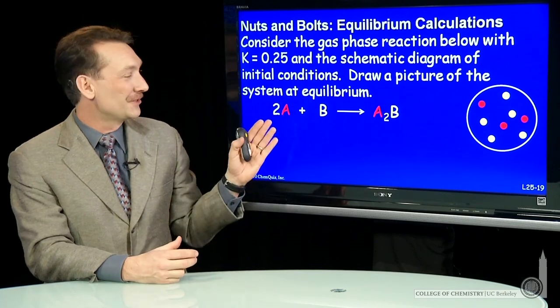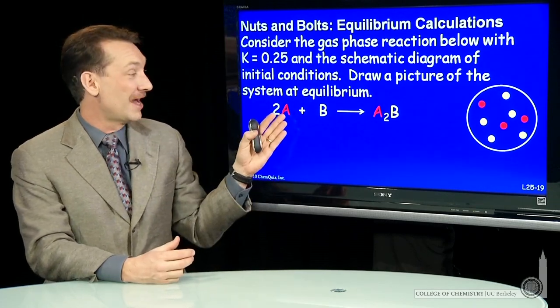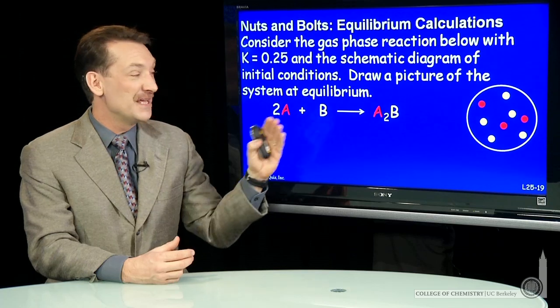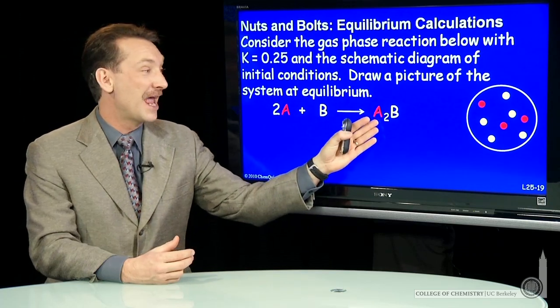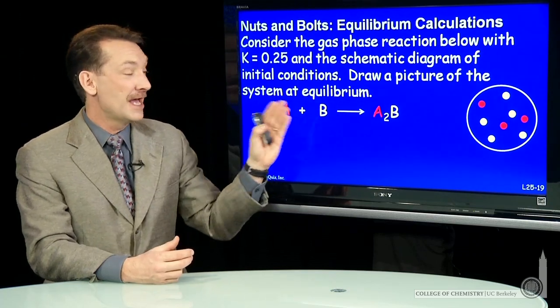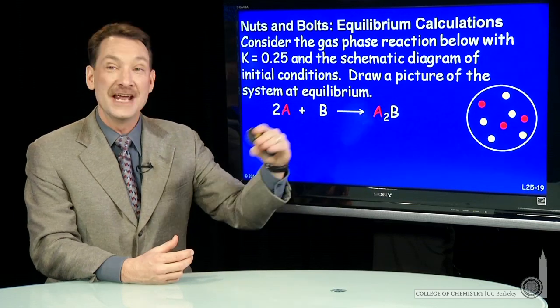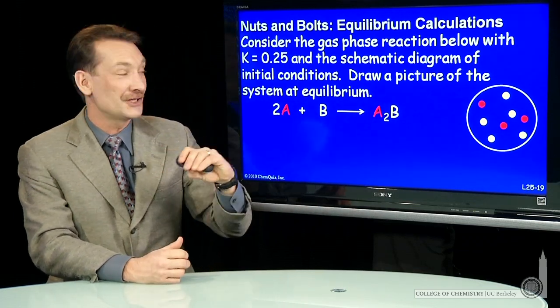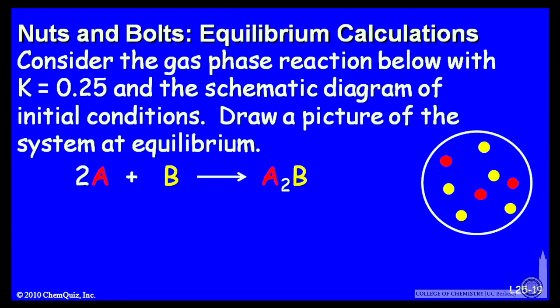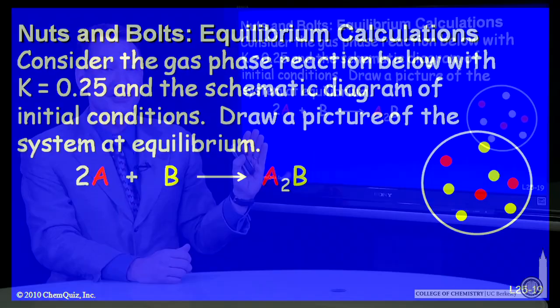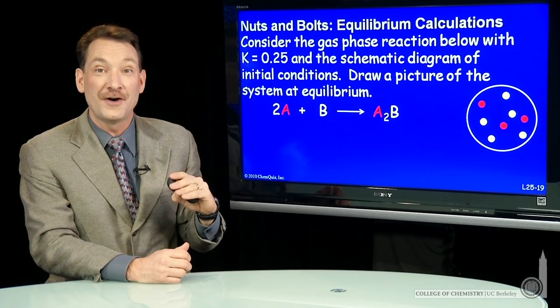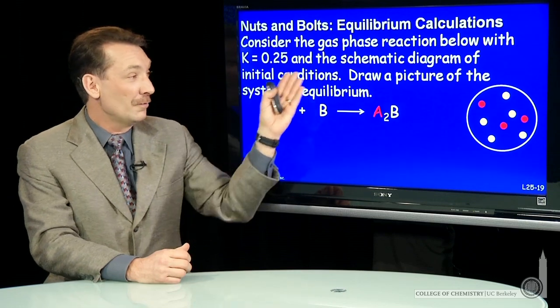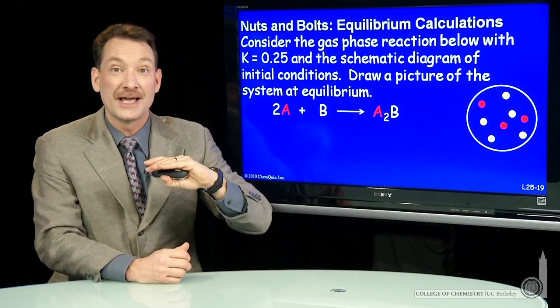Let's look at the equilibrium calculation for this schematic reaction. I have A molecules and B molecules reacting to form A2B molecules. So two moles of A and a mole of B form an A2B. I've got some schematic initial conditions here, the B molecules in yellow and the A molecules in red. This equilibrium for this reaction has an equilibrium constant of 0.25. So what would this schematic picture look like at equilibrium?